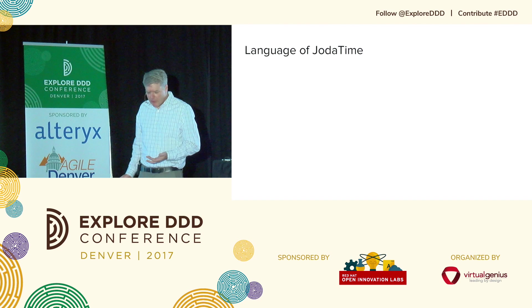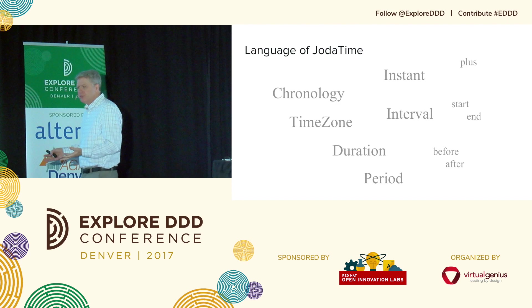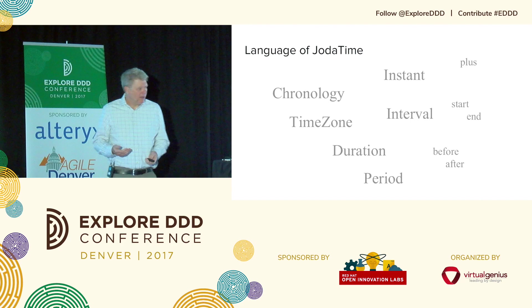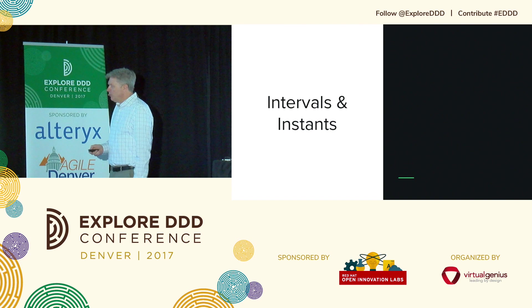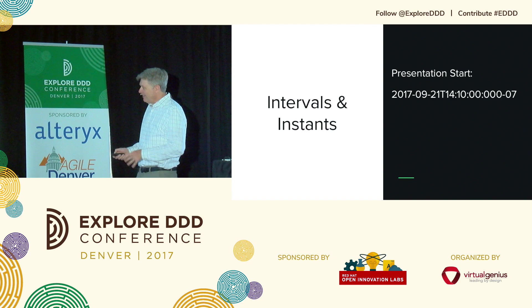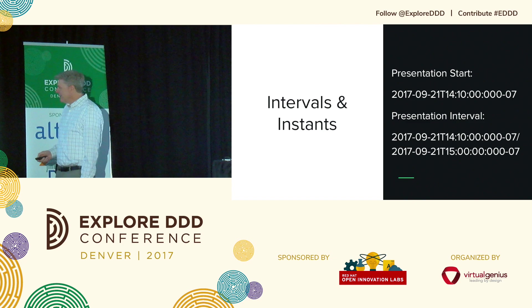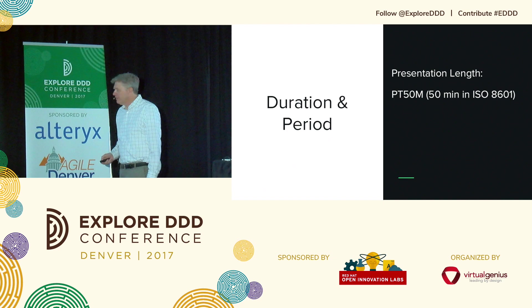Getting into JodaTime — it has a pretty nice domain language, a pretty nice ubiquitous language for time. You can say things about what time it is, intervals of time, durations of time, and chronology so that you can in principle have different time systems, although in practice I don't think people use that very much. For example, intervals and instants: this presentation is supposed to start at this time, and it's supposed to last over this interval, giving a presentation length of this long.